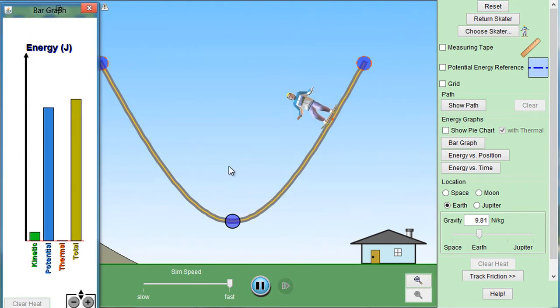So notice how, as Ken goes back and forth, his kinetic energy in green reaches a peak at the bottom and it is zero at the top. And notice how his potential energy is greatest when he's at the top and least when he's at the bottom.